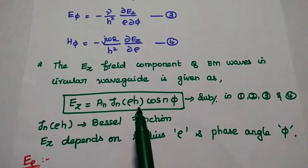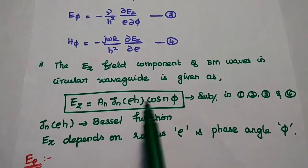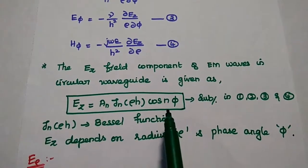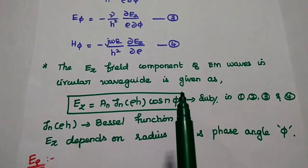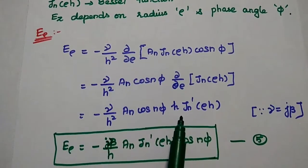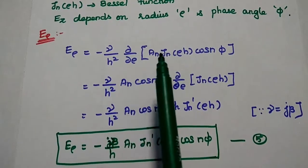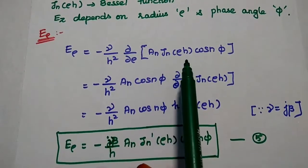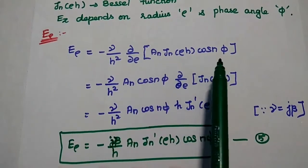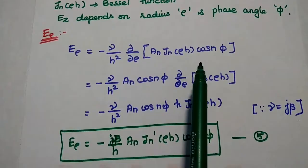AN is the constant value. This EZ component depends on the values of rho and phi, where rho is the radius and phi is the phase angle. Now we are going to substitute this EZ value in the above equations. First we are going to find the value of E rho: E rho is equal to minus gamma by H square, dou by dou rho of AN JN of rho H cos N phi. Here AN and cos N phi are independent of rho, so we can take them outside.